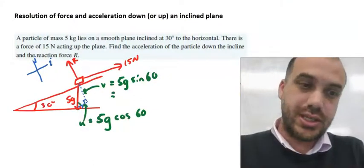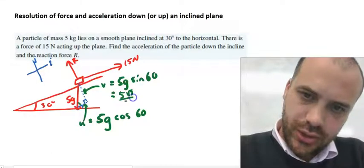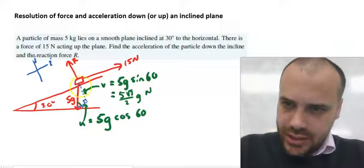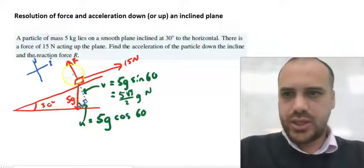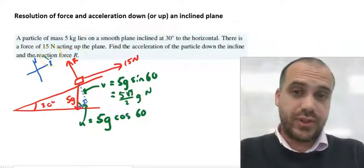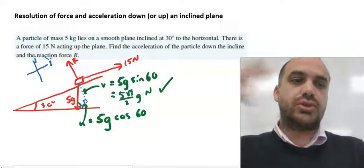Alright, so this 5g sine 60 is equal to 5 root 3 on 2g newtons. Now, that is this blue line here which is equal to this reaction force. So, we found the reaction force, we found half of this question now, that's that there, 5 root 3 on 2g newtons.